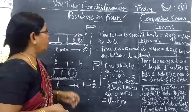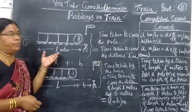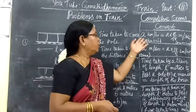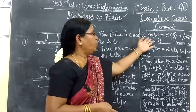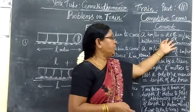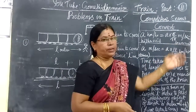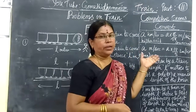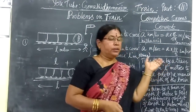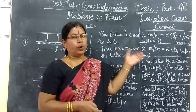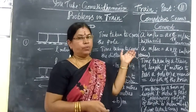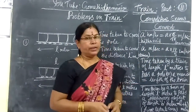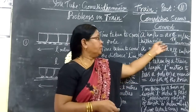Now we are going to see some important facts and formulas. See the first one: if you are given 8 km per hour, it equals 8 multiplied by 5/18 meters per second. That means you are converting km per hour into m per second — higher unit to lower unit. To change from higher unit to lower unit, you multiply by 5/18. Keep that in mind.